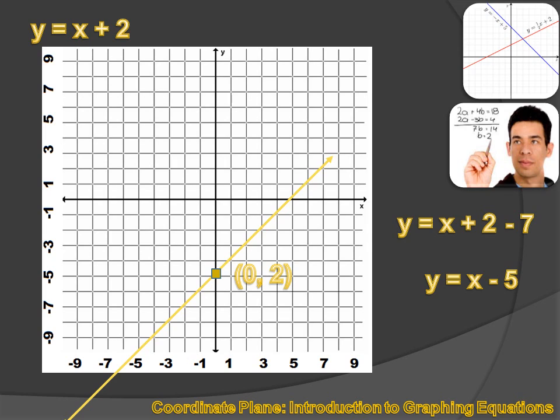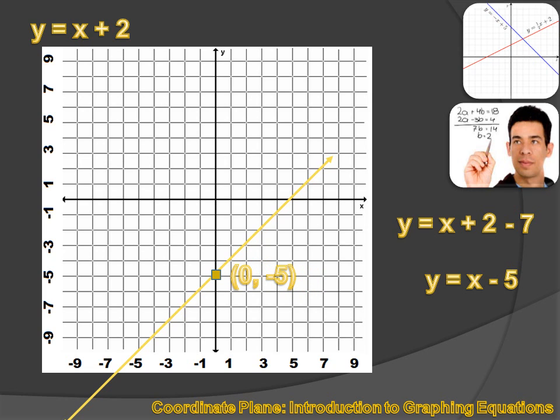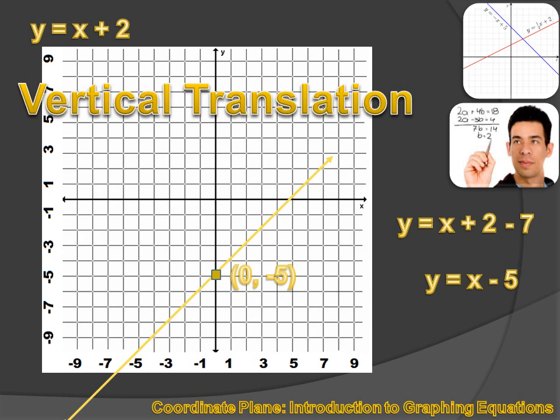And that point that we earlier identified as 0, 2 would no longer be at 0, 2 because we changed our y value by 7 spaces. We slid the line down 7 units. It would now be 0, 2 minus 7 or 0 minus 5. And we call that a vertical translation. So, a vertical translation is a motion of our line up or down or a change in the y values.